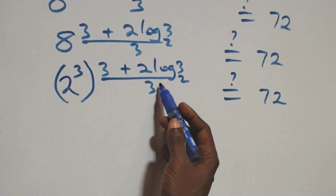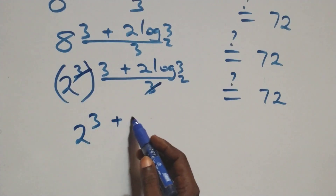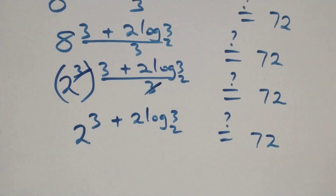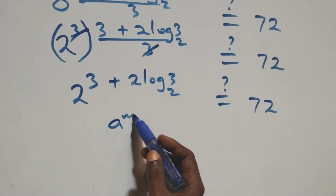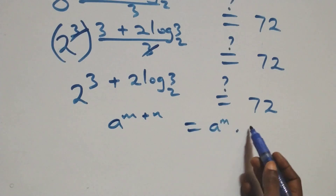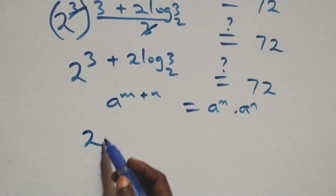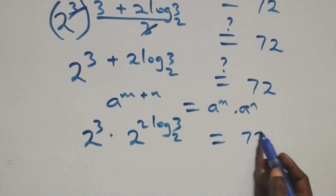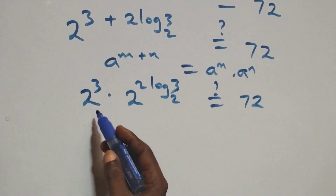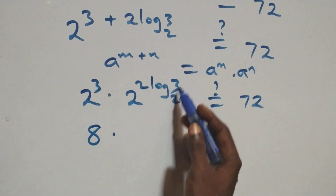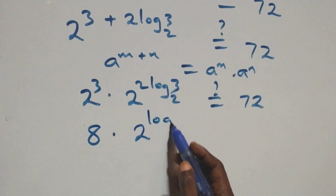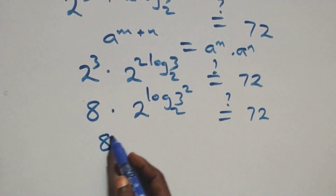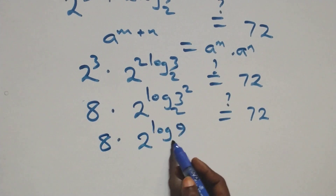The power multiplied by 3 allows us to work with 2 raised to power (3 + 2 log₂3), which equals 72. Applying the log indices rule where a raised to power (n + m) equals a^n times a^m, we get 2 raised to power 3 times 2 raised to power 2 log₂3. That gives 8 times 2 raised to power log₂(3 squared), which is 8 times 2 raised to power log₂9 equals 72.